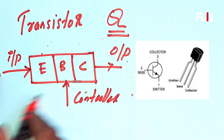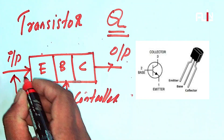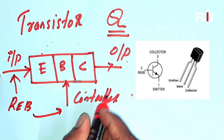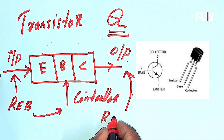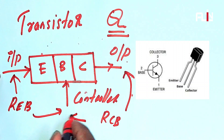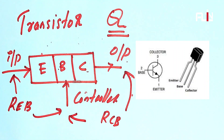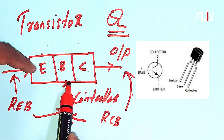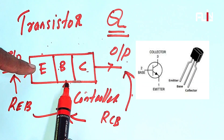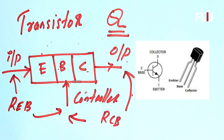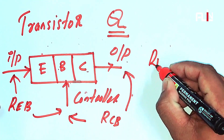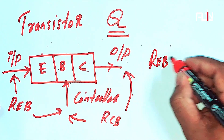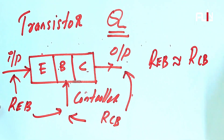The transistor circuit has an Emitter-Base resistance, Reb, and a Collector-Base resistance, Rcb. The Basin Emitter resistance and Collector Basin resistance values are noted. Almost equal: Reb ≈ Rcb — approximately 62 and 800.